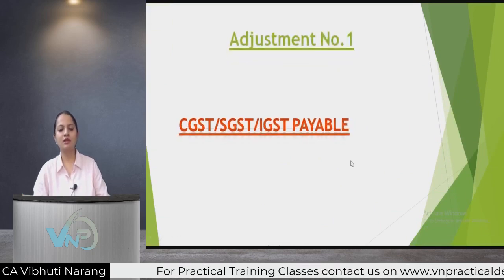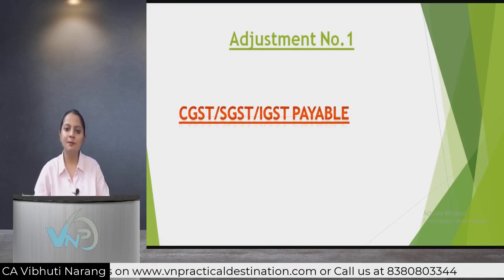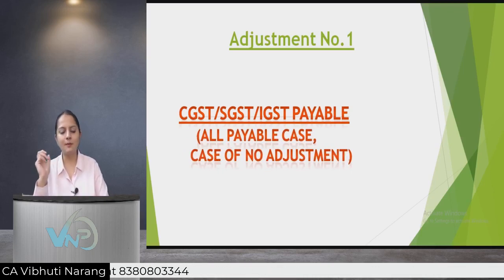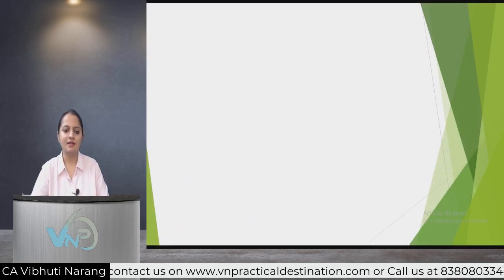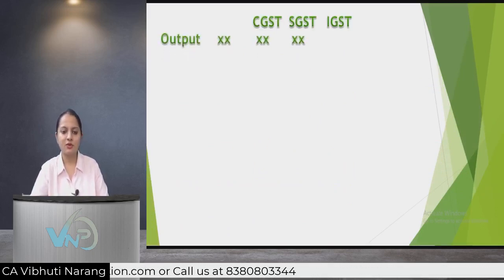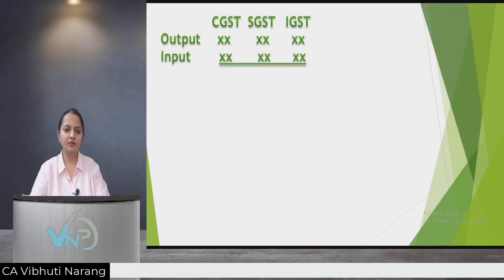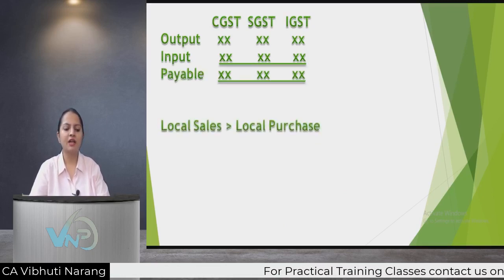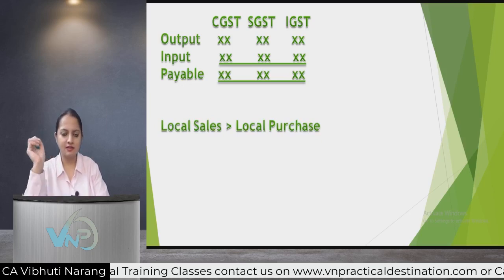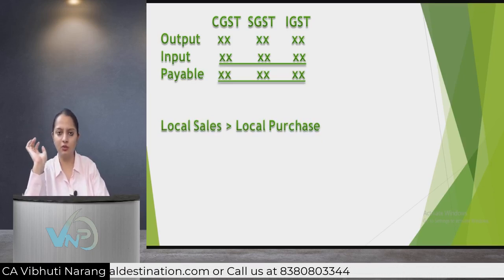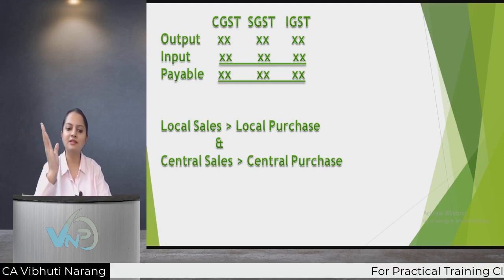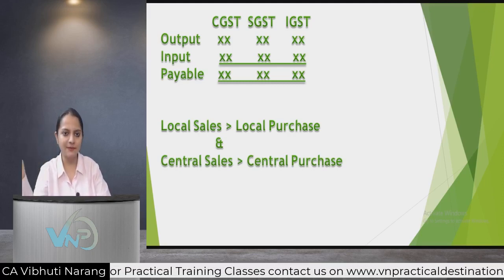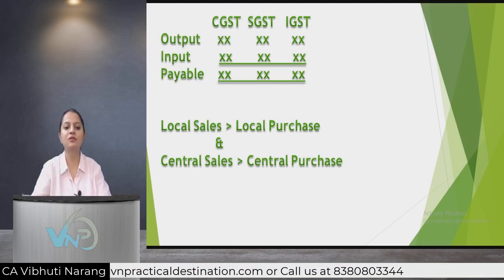Adjustment number one is a case where CGST, SGST, and IGST — all three heads — are payable. This means it is a case of no adjustment. When you have all amounts payable, your sales are more than your purchases, so we need not adjust anything under any head.